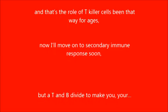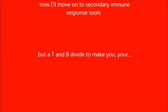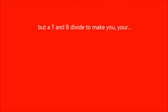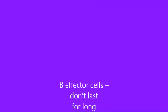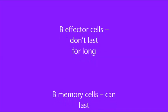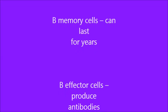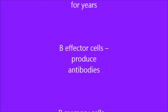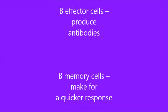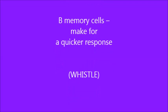Now moving on to the secondary immune response: B and T memory cells divide. B-effector cells don't last long, B-memory cells can last for years, producing antibodies, making for a quicker response.